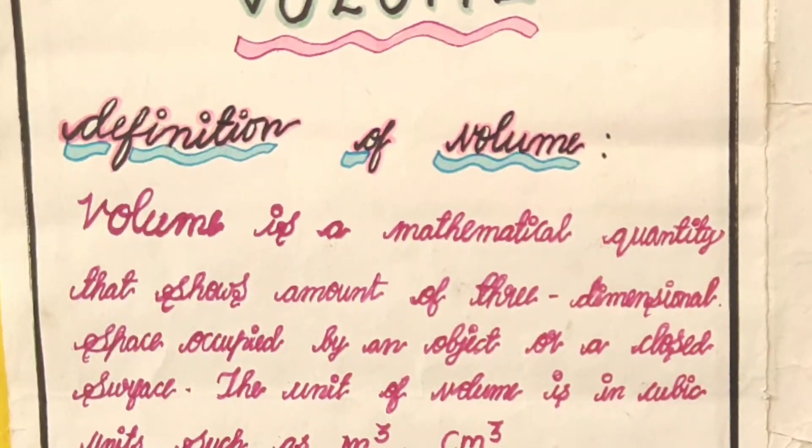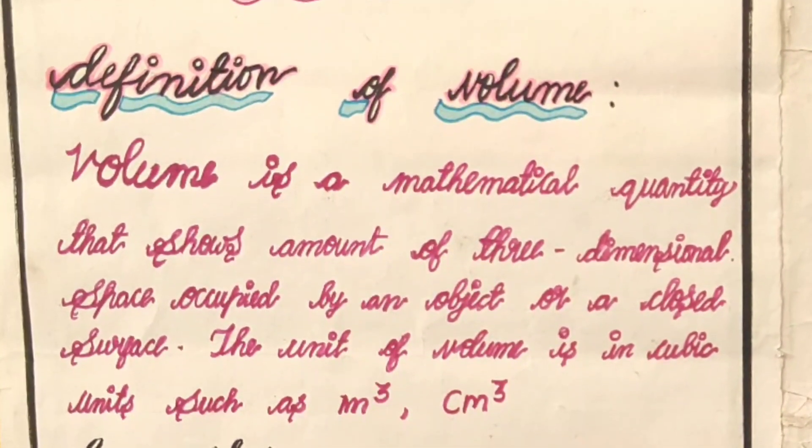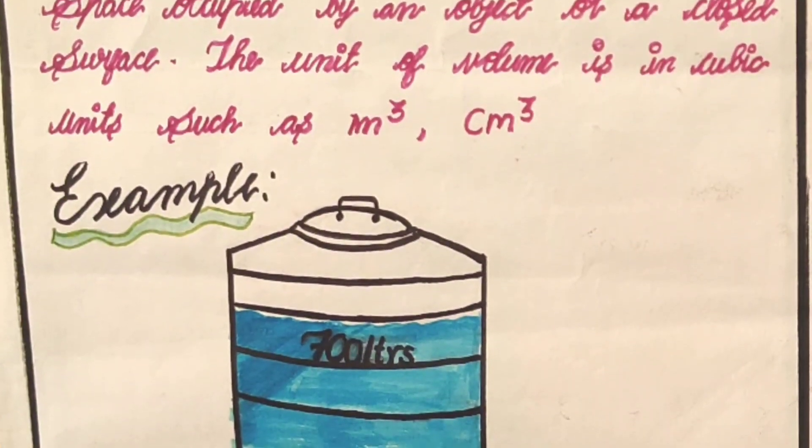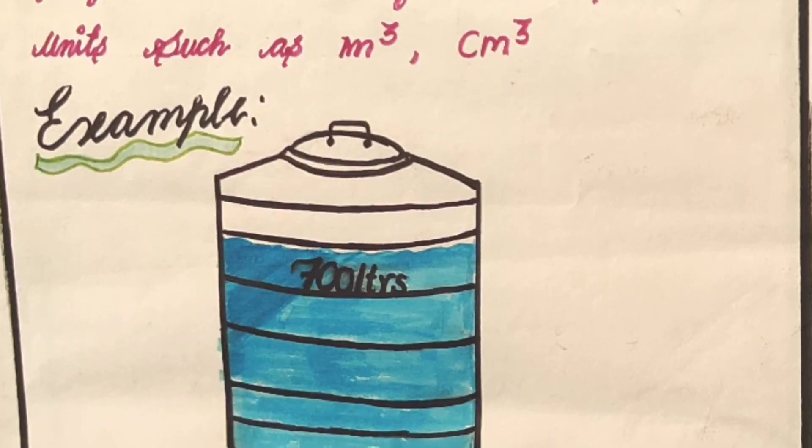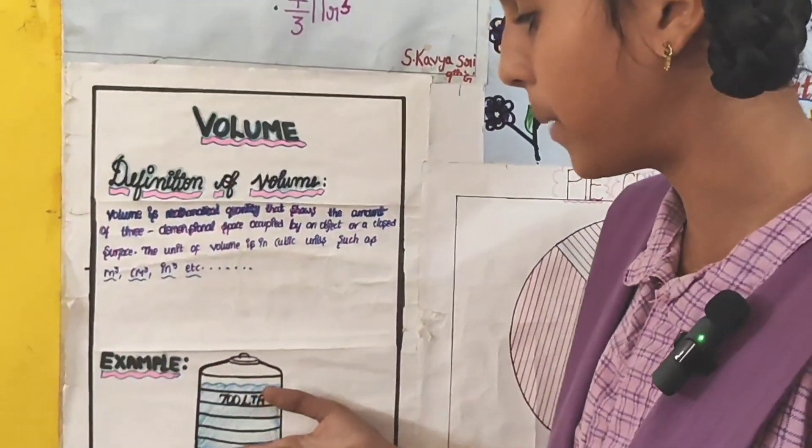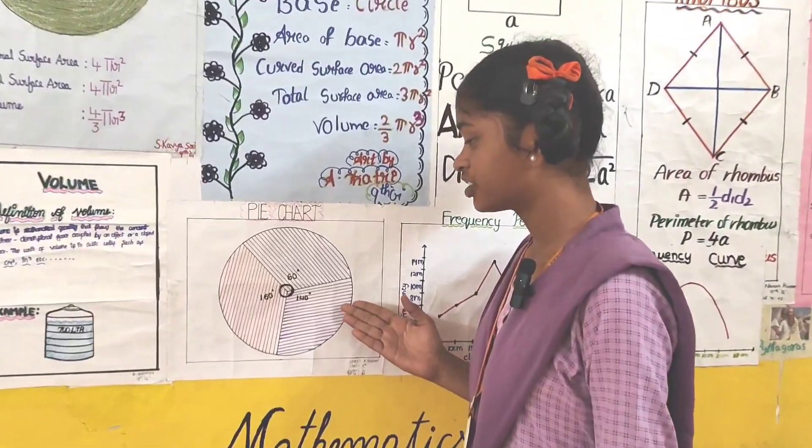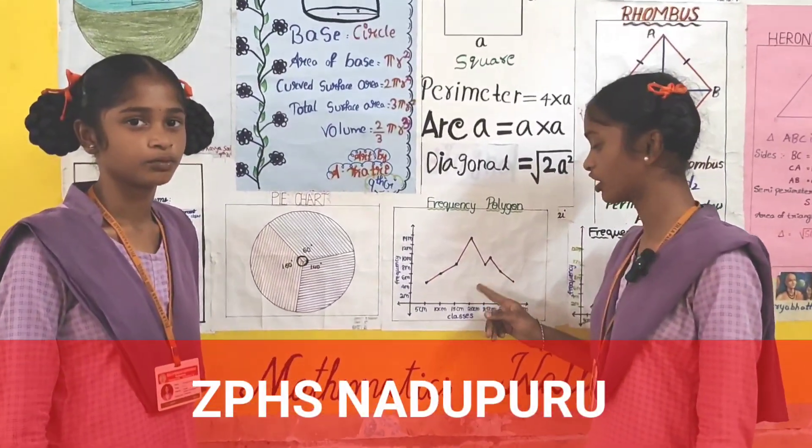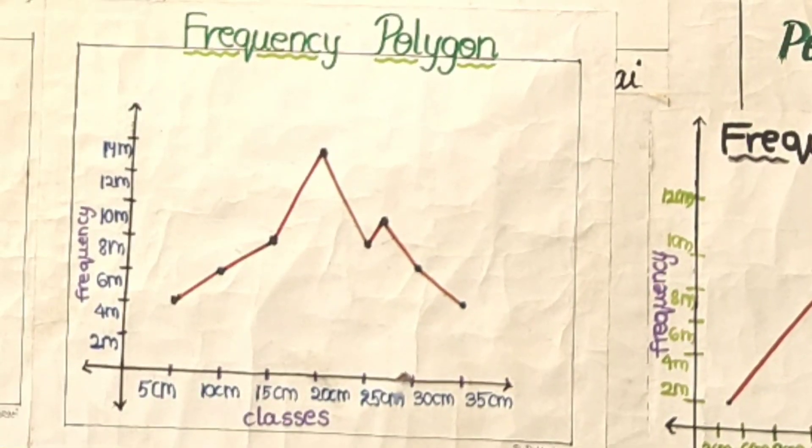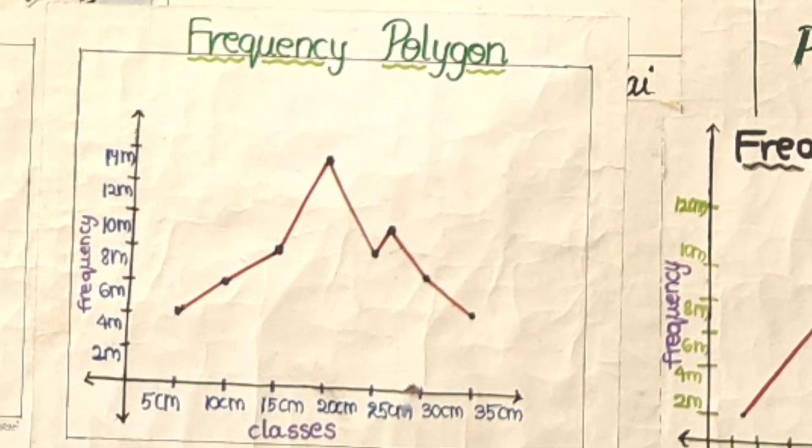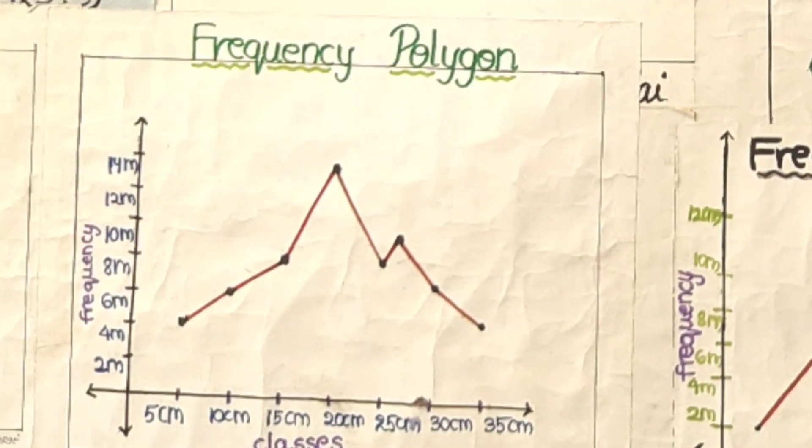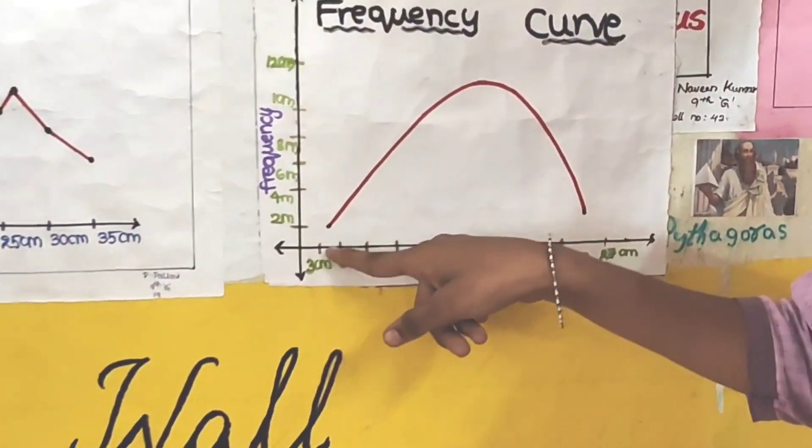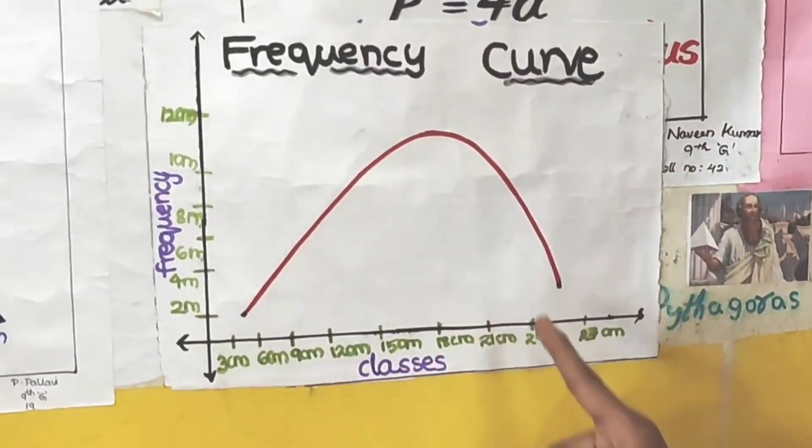Volume is a mathematical quantity that shows the amount of three-dimensional space occupied by an object or a closed surface. The unit of volume is in cubic units, such as cubic meters and cubic centimeters. Example: tank. This is pie chart. This shows specific information in a circle. This is frequency polygon. The mid-value of classes in x-axis, the frequency in y-axis. The set of lines are called frequency polygon. Frequency curve: the mid-value of classes in x-axis, the frequency in y-axis. The intersect of curve is called frequency curve.